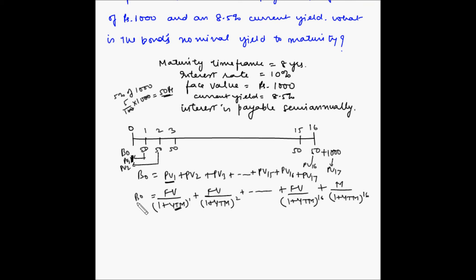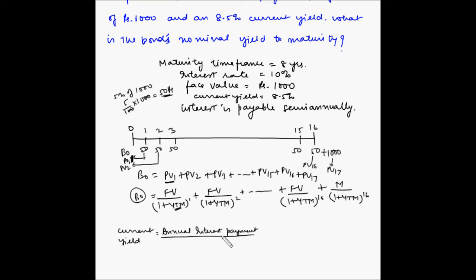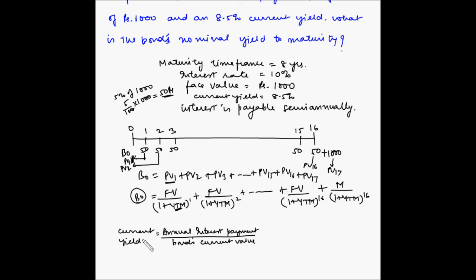We want to find out yield to maturity, but we don't know the present value of the bond. However, we have been given that the current yield is 8.5%. Current yield is equal to annual interest payments divided by the bond's current value. The current yield is 8.5%, which when used in the formula becomes 0.085. This equals annual interest payment divided by B0.